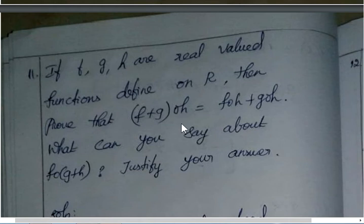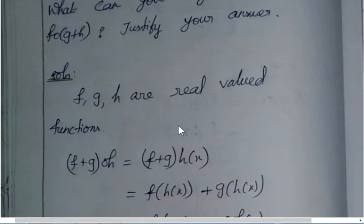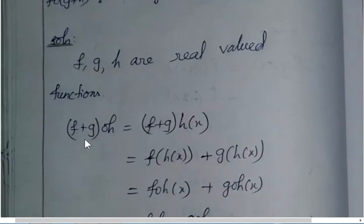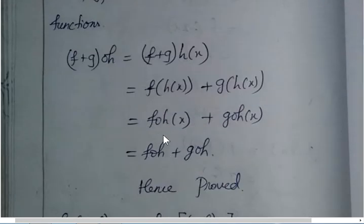First, we can calculate f plus g composite h. So, f, g, h are real valued functions. f plus g composite h is nothing but (f+g)h(x). And then you write f(h(x)) + g(h(x)) by using the distributive law. And then f(h(x)) is nothing but f composite h(x) plus g composite h(x). And then you omit that x: foh + goh. Hence proved.